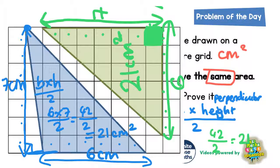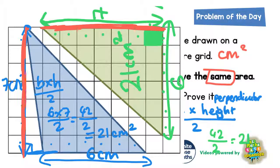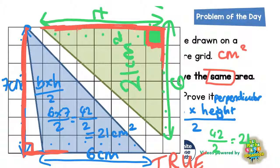Both the blue triangle and the green triangle have an area of 21 centimeters squared, even though the two triangles look slightly different. The green triangle has its perpendicular height touching the edge of the triangle, whereas the blue triangle has its perpendicular height outside the actual triangle. But the similarity is that both heights of seven make a right angle with the line level with the base. So yes, the final answer is true — they both have exactly the same area: 21 centimeters squared.